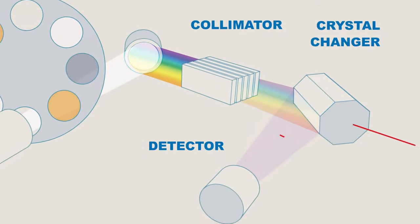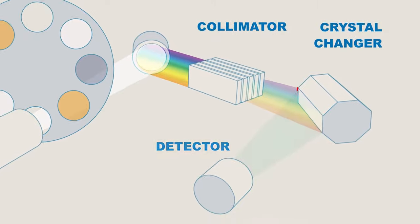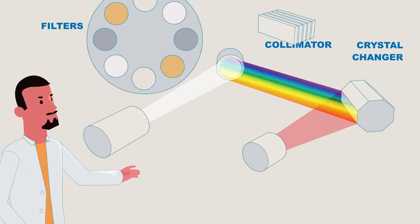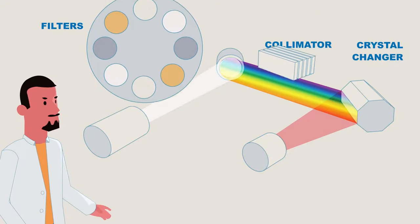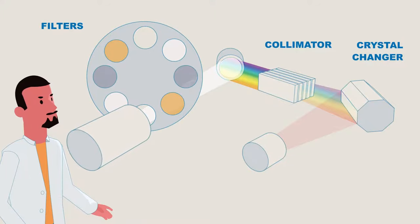The detector is positioned at 2 theta to measure the specific elemental wavelength. Placing all of these components between the signal coming off the sample and the detector comes at a cost. The intensity reaching the detector is diminished significantly. Therefore, WDXRF X-ray sources must be much more powerful.